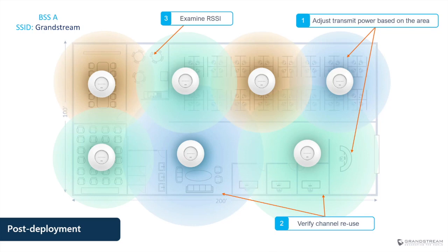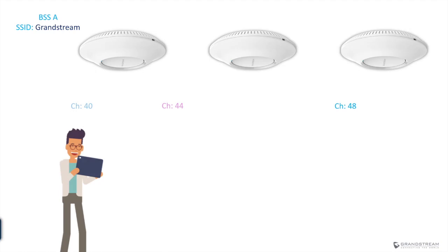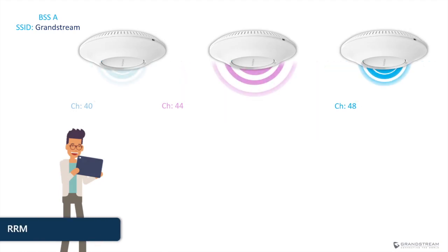Examining RSSI using a Wi-Fi analyzer application ensures the Wi-Fi signal is strong throughout the location. The GWN dashboard also provides information regarding the RSSI value of connected clients, giving you a tool to monitor the current signal strength of wireless stations. Additionally, there are Wi-Fi features an installer might enable to improve performance. The first is RRM (Radio Resource Management), which is used to dynamically control the transmit power of an access point.